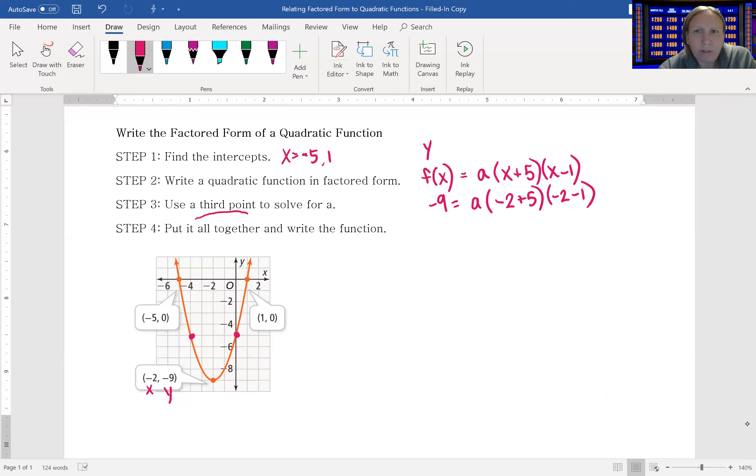And we can solve the parentheses. So we have -9 = a(3)(-3), and -9 = a(-9). And I think you can see what's happening here. If not, you can always divide both sides by that, and we find that a does indeed equal 1.